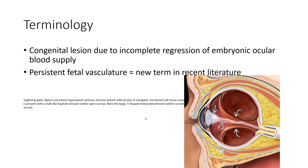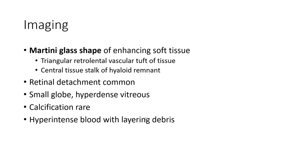On MRI, in cases of persistent hyperplastic primary vitreous, a triangular retrolental soft tissue mass is present with a stalk-like hyaloid remnant, indicated by the white open arrow, and a large V-shaped retinal detachment, indicated by the white closed arrow. Imaging features include enhancing soft tissue, a triangular retrolental vascular tissue, a central hyaloid remnant stalk, retinal detachment, small globe, hyperdense vitreous, and hyperintense blood with fluid layering.